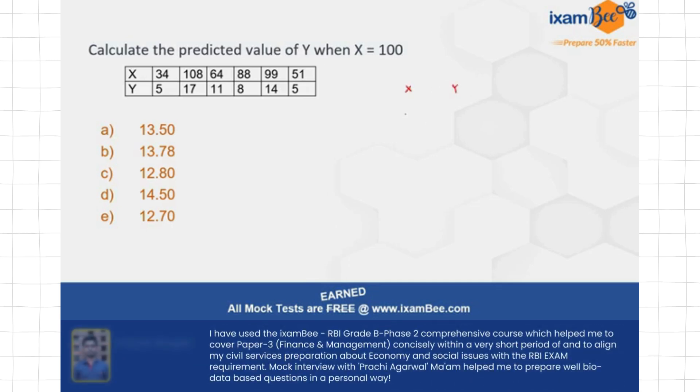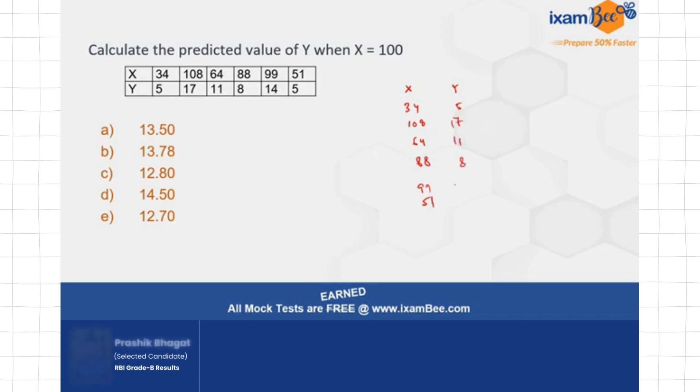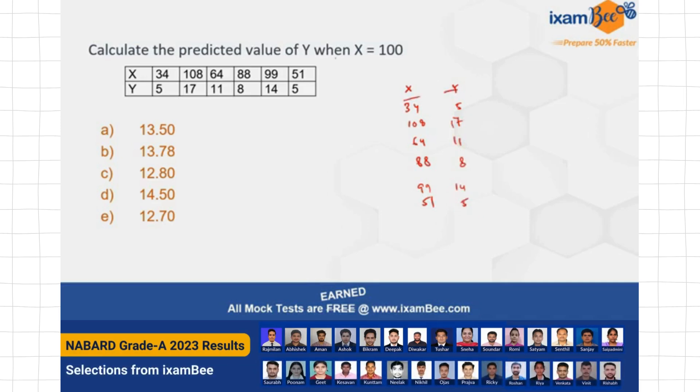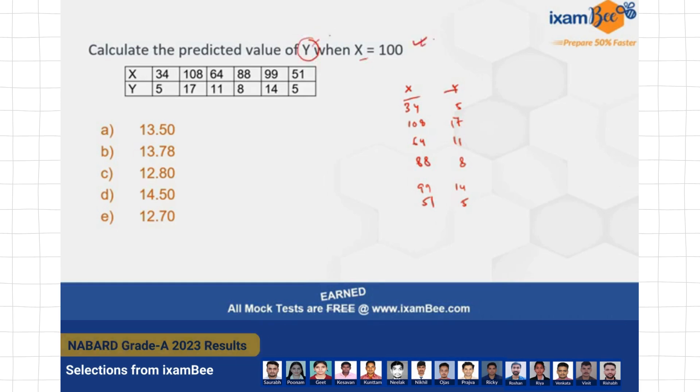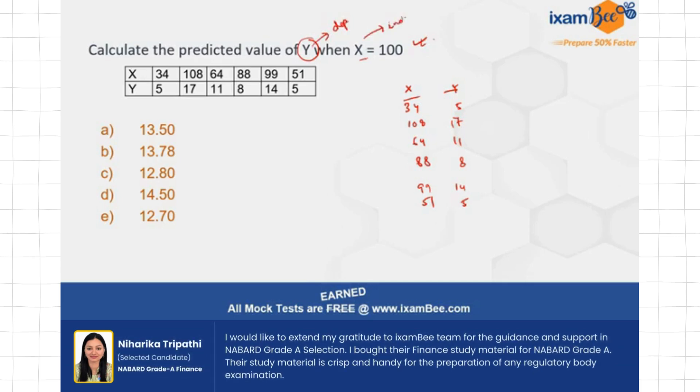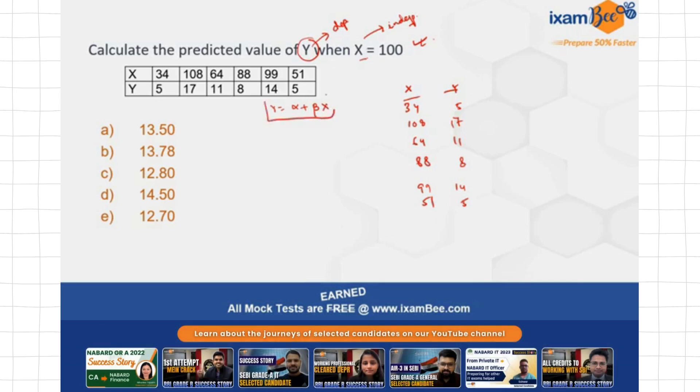So see, you are given the values of x and y. X is 34, 108, 64, 88, 99, 51. These values are given to you. Y values are 5, 17, 11, 8, 14 and 5. Now you have to calculate the predicted value of y when x is 100. So this statement tells you that your dependent variable is y whereas your independent variable is x. Now by this statement, I know what it is. Now I need the regression equation. I need y is equal to alpha plus beta x. Once I have this regression equation, what kind of form this regression equation takes, I can plug in the value of x here in the equation to find the value of y. This is the step.